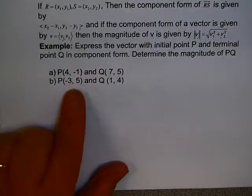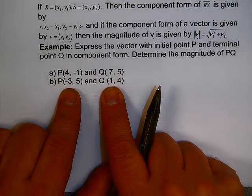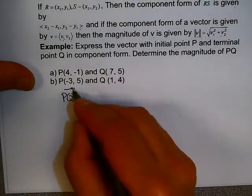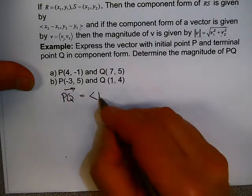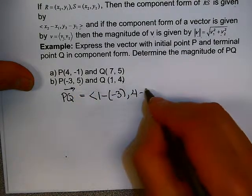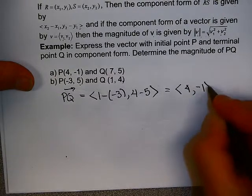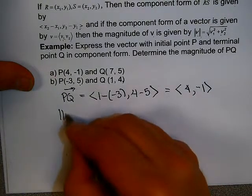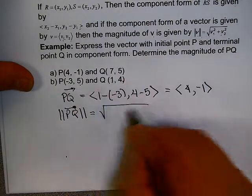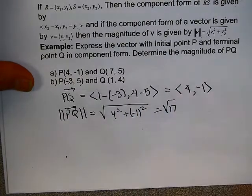Let's try the second example. To get PQ, I subtract the x-coordinates and subtract the y-coordinates, giving ⟨4, −1⟩. The magnitude of PQ is the square root of 4 squared plus negative 1 squared, which is the square root of 17.